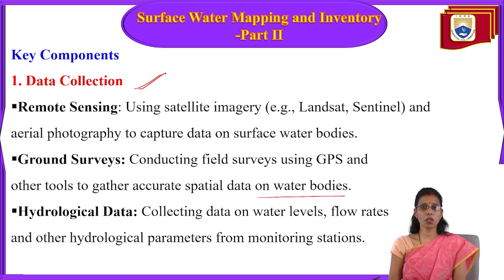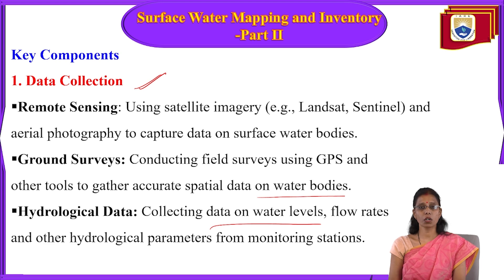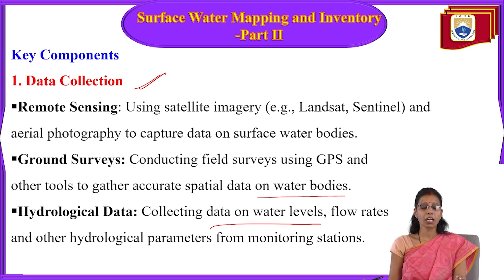The third method is hydrological data collection — collecting data on water levels, flow rates, and other hydrological parameters from monitoring stations. You can collect information like water levels present in the surface water, flow rates, and hydrological parameters. So the first key component for surface water mapping is collection of data through remote sensing, field surveys, and hydrological data.